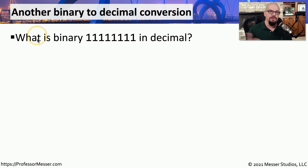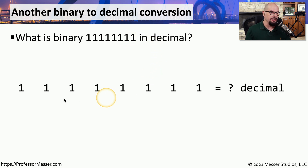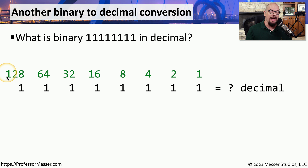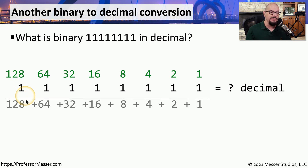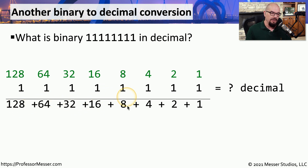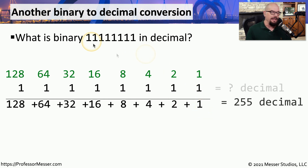Let's take it to the natural extreme and determine what the binary value of 11111111 is in decimal. Same process — we put down that binary value of all ones and place our conversion chart on top. Now we're adding together every single part of that conversion: 128 plus 64 plus 32 plus 16 plus 8 plus 4 plus 2 plus 1, meaning that all ones in binary is the equivalent of 255 in decimal.